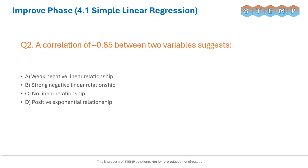A correlation of minus 0.85 between two variables suggests...